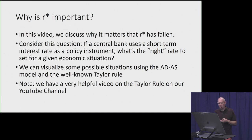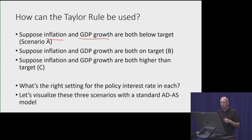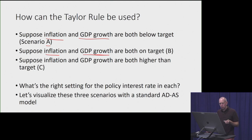We'll use those frameworks to help us understand this situation — and we have a helpful video on the Taylor rule elsewhere on our YouTube channel. We're going to look at three particular scenarios. Scenario A: both inflation and GDP growth are below the Fed's target. Scenario B: both inflation and GDP growth are right on the Fed's target. Scenario C: inflation and GDP are both higher than what the Fed wants. The question is, given those three scenarios, what's the right interest rate to set for each?